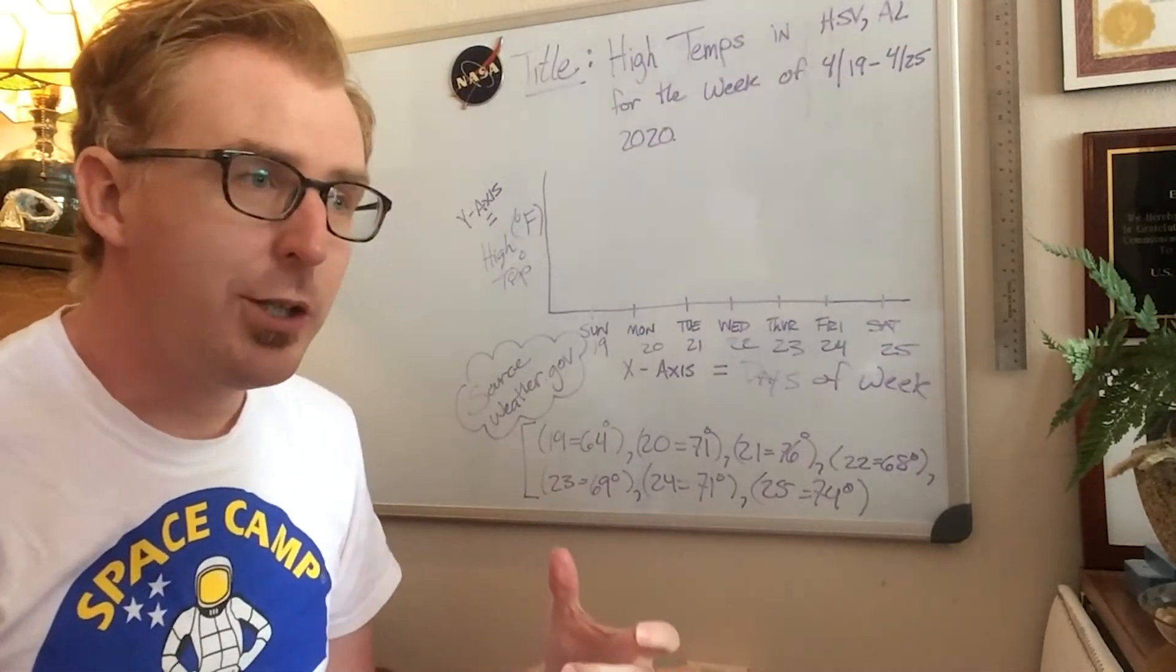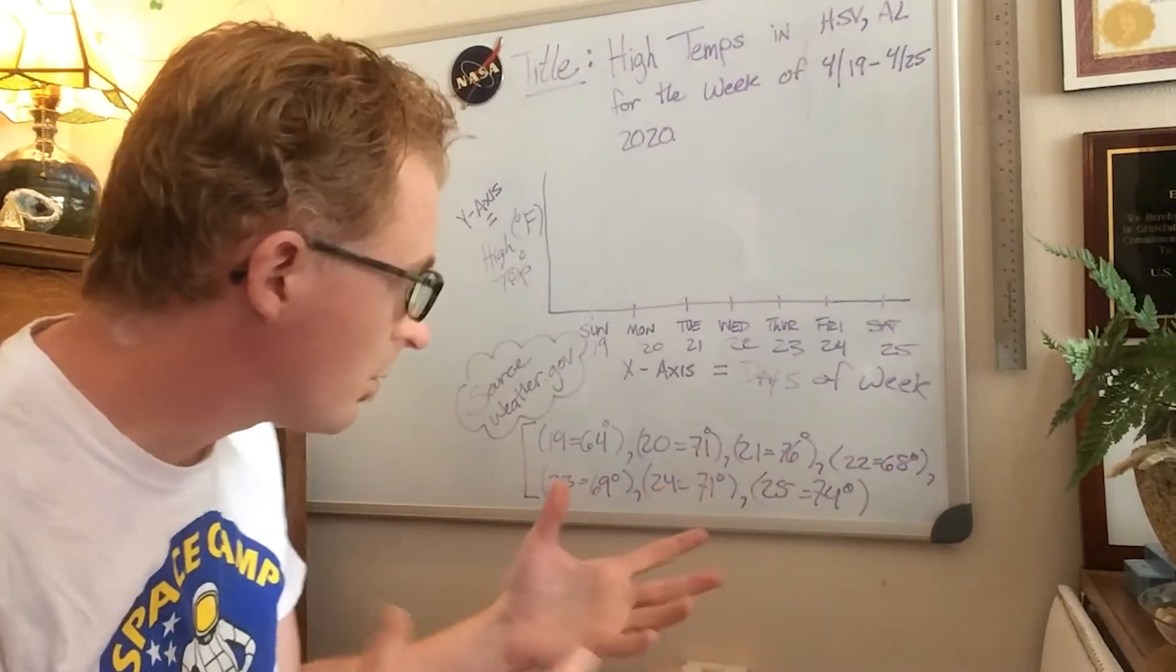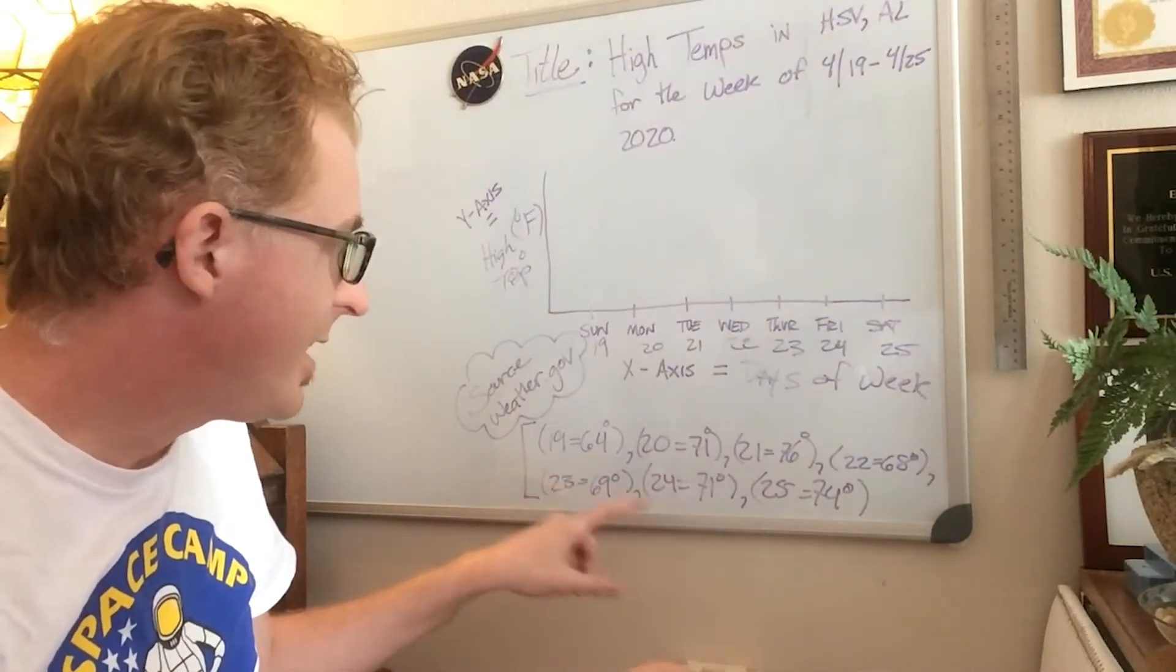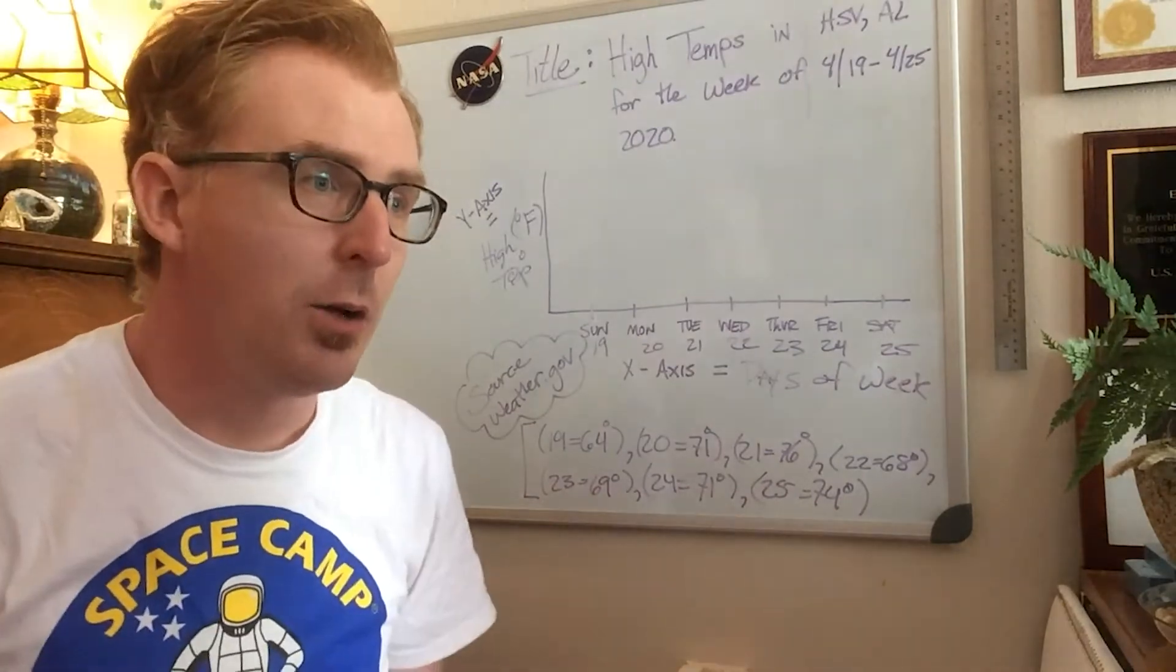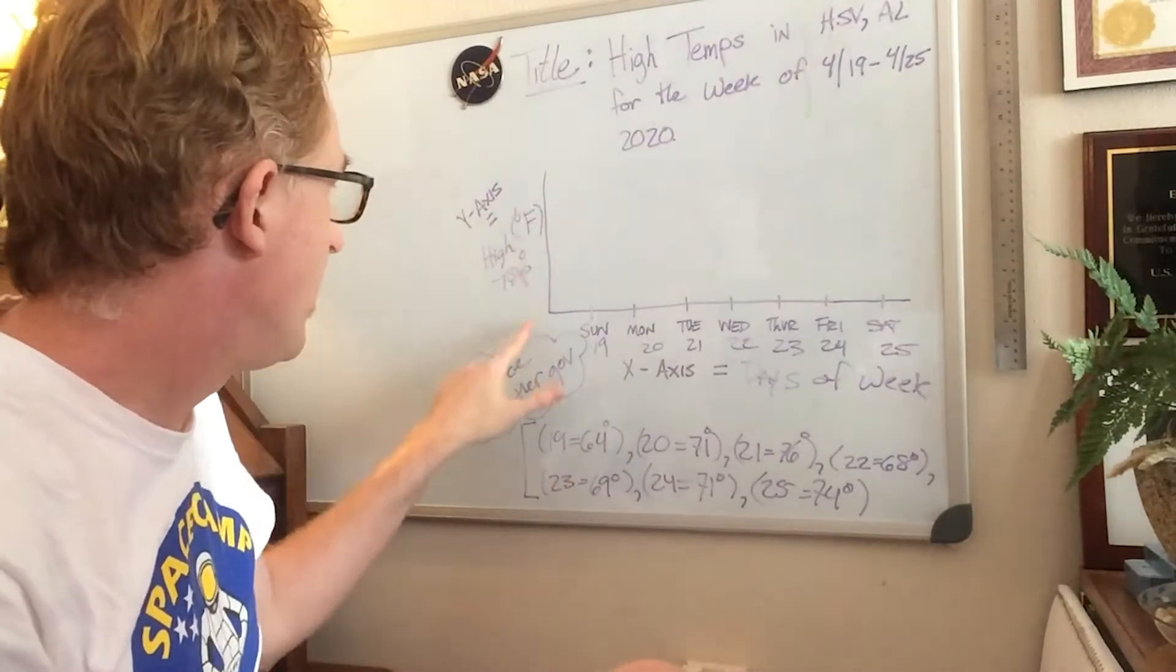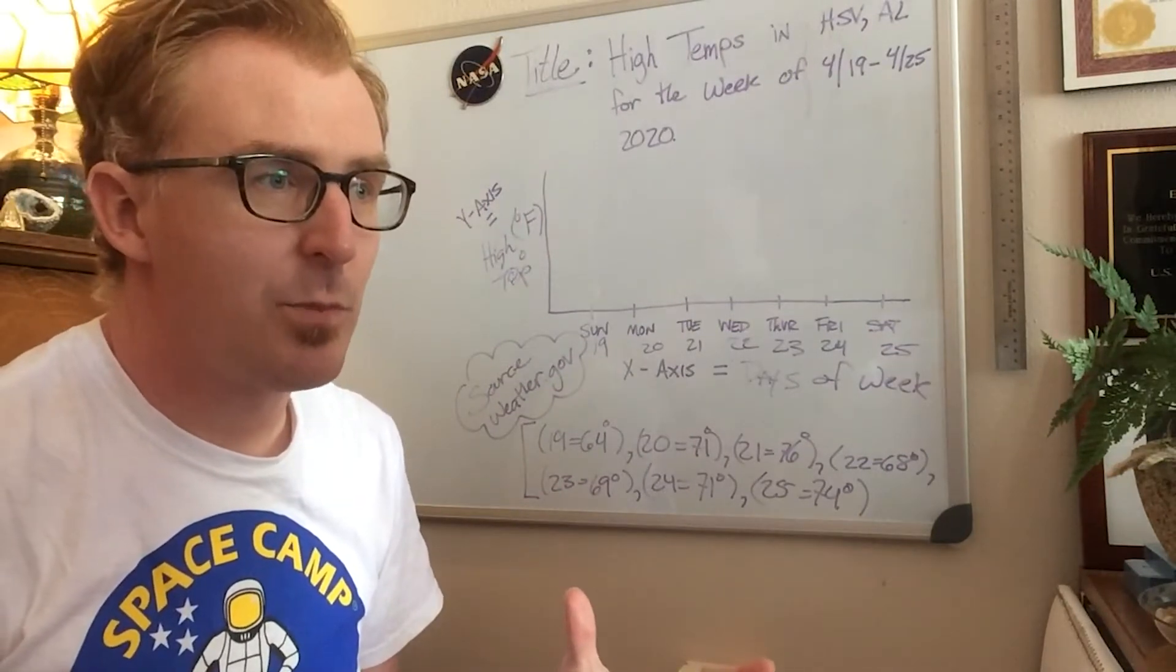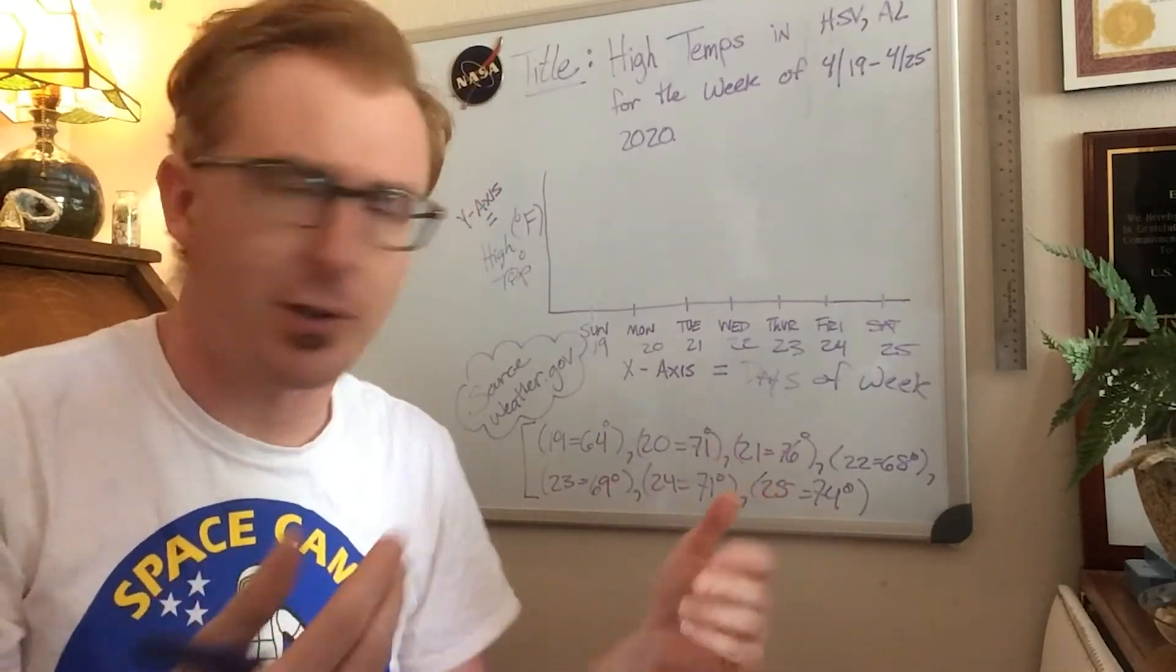So going to find a scale based on what we have here with this data. So it looks like it's ranging between the mid-60s to mid-70s. So I'm going to start it in at 55 degrees and go up in increments of five.